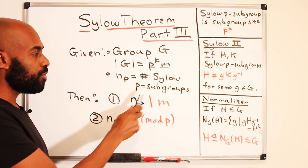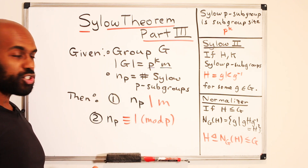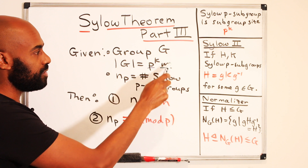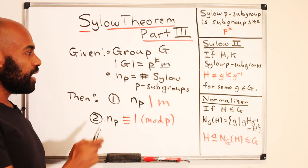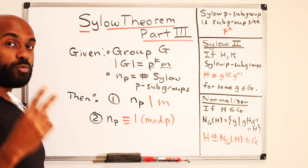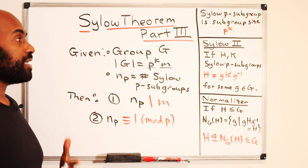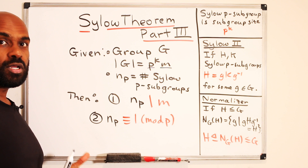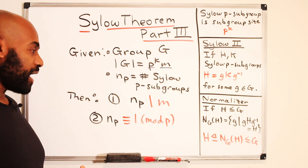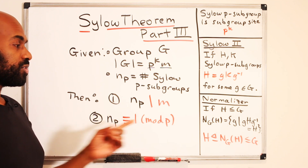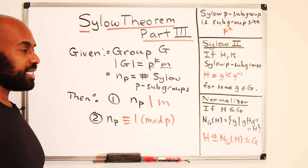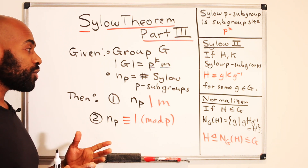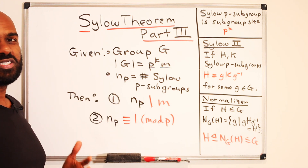Part three states that if n_p is the number of Sylow p-subgroups, we get two restrictions: first, n_p must divide m; second, n_p must be congruent to 1 mod p. We'll prove both using a group action approach — the same strategy used in the first and second Sylow theorems — defining a set and a group action to get the result we want.